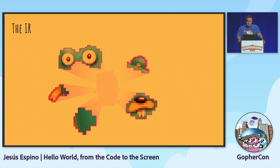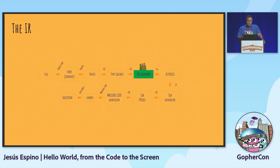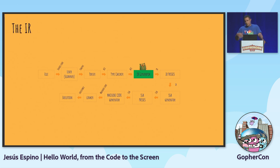The intermediate representation is another, different AST representation. It's still an abstract syntax tree but slightly different - it's based on package, no longer on files. Each package has one intermediate representation. It's generated from the previous AST by looping over all the file ASTs and generating this intermediate representation.